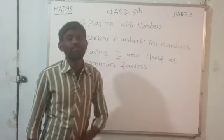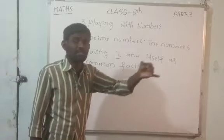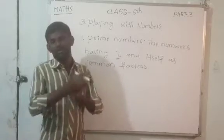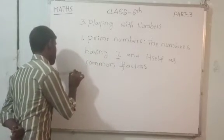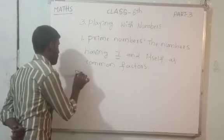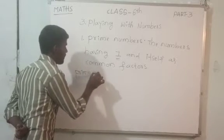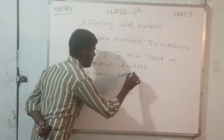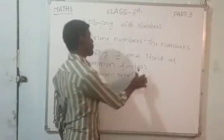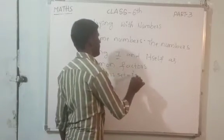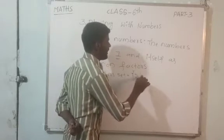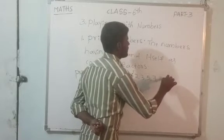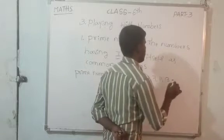Okay. Next you can ask: sir, we understood the definition of Prime Numbers. Then, what are the numbers we are going to call Prime Numbers? The Prime Numbers set begins with 2, 3, 5, 7, 11, 13...